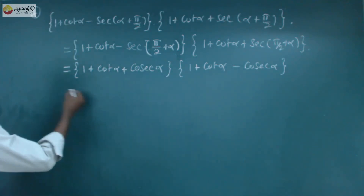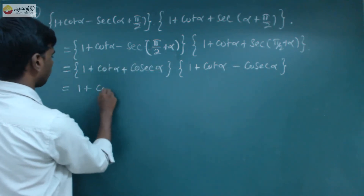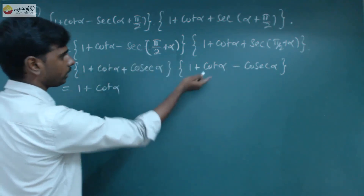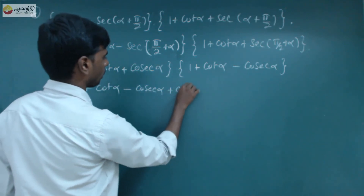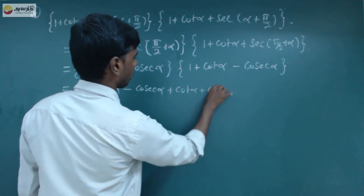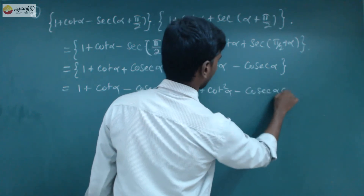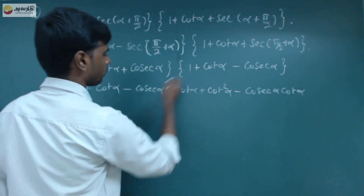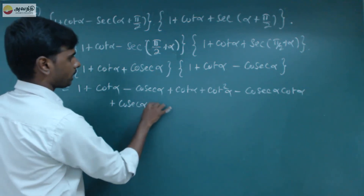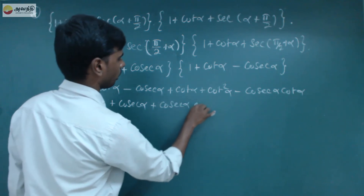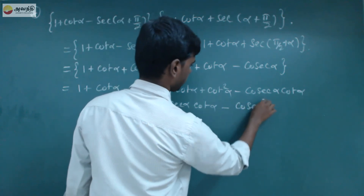So let's multiply this. 1 into 1 is 1, plus 1 into cot alpha is cot alpha, minus 1 into cosecant alpha is minus cosecant alpha. Next, cot alpha multiplied: cot alpha plus cot squared alpha. Next, minus cosecant alpha into cot alpha. Next, cosecant alpha multiplied: plus cosecant alpha. Next, plus cosecant alpha into cot alpha. Plus into minus: minus cosecant squared alpha.